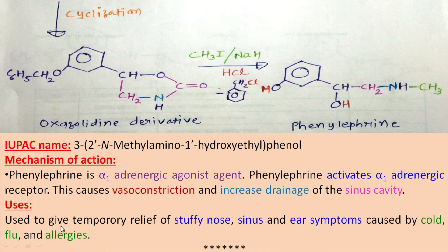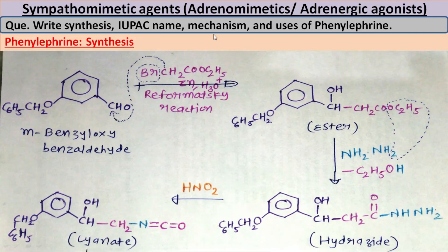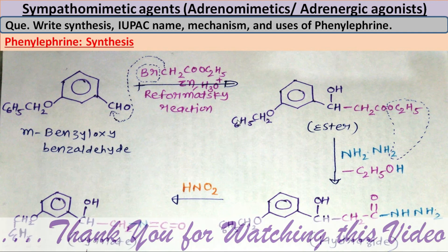The uses of phenylephrine: it gives temporary relief of stuffy nose, sinus and ear symptoms caused by cold, flu and allergies. So this is all about phenylephrine — its synthesis, IUPAC name, mechanism and use. Whenever a question is asked, you have to mention all these things in your examination. Prepare well. We will meet again in the next lecture with another topic. Thank you for watching this video.